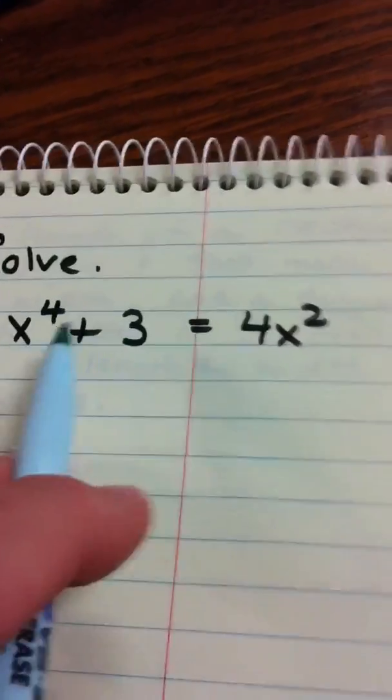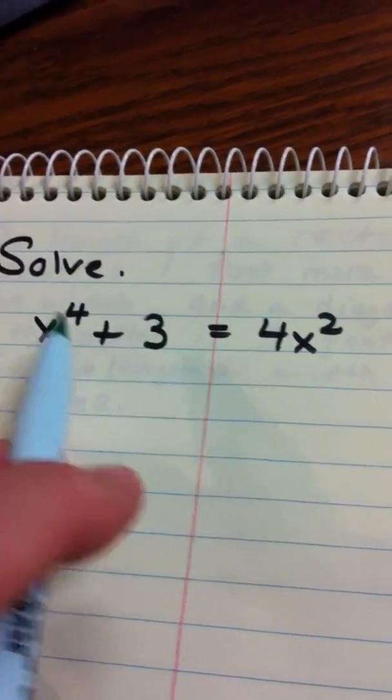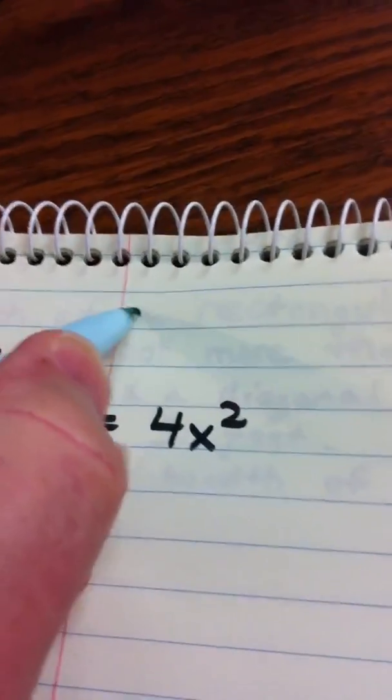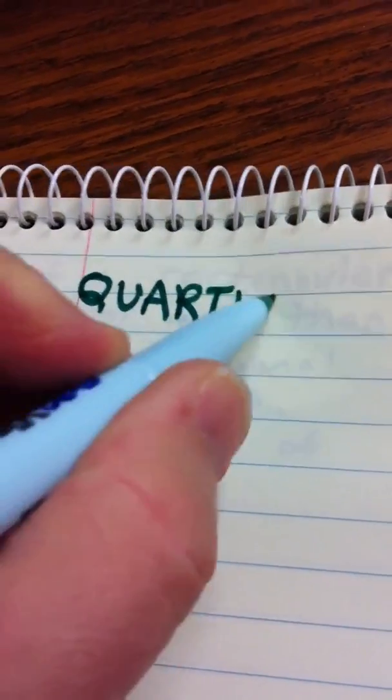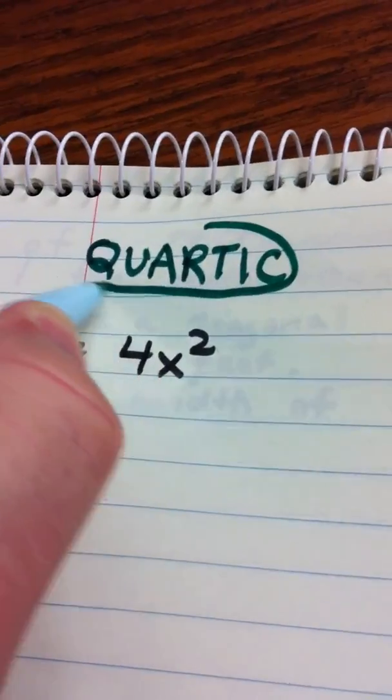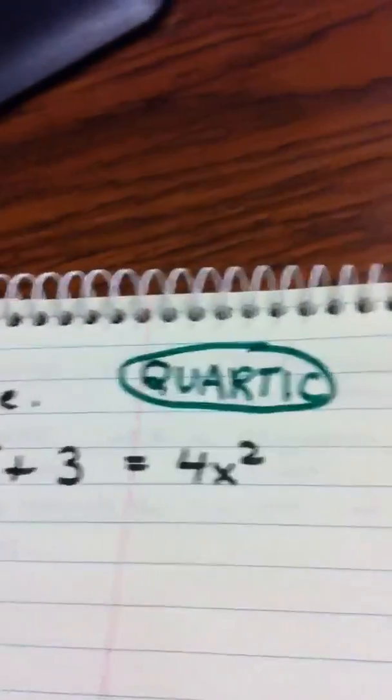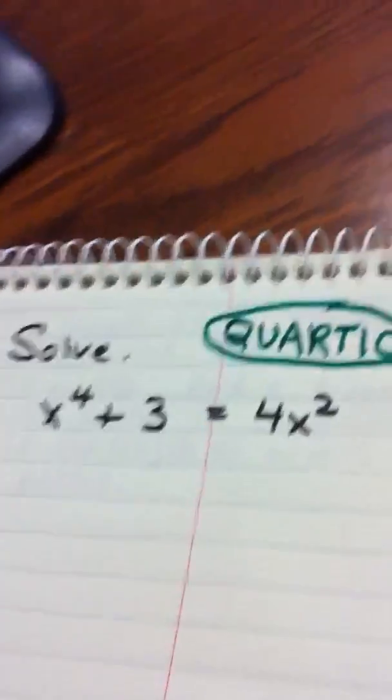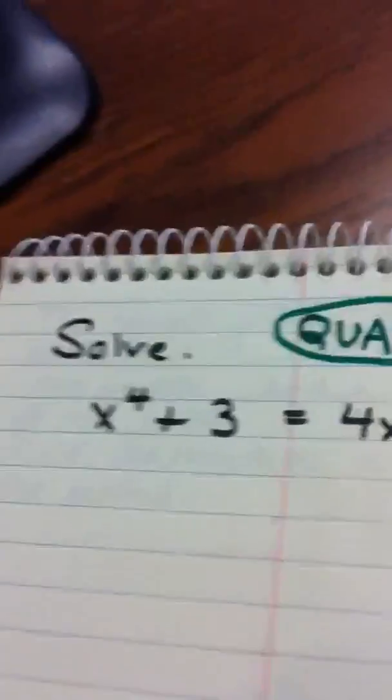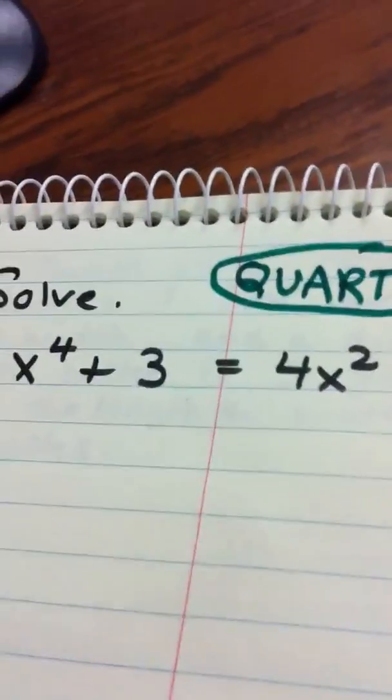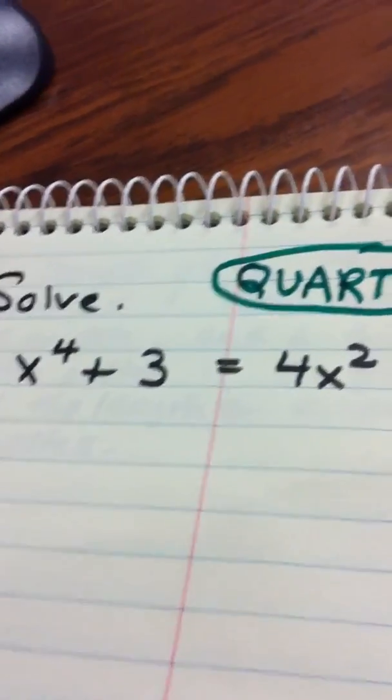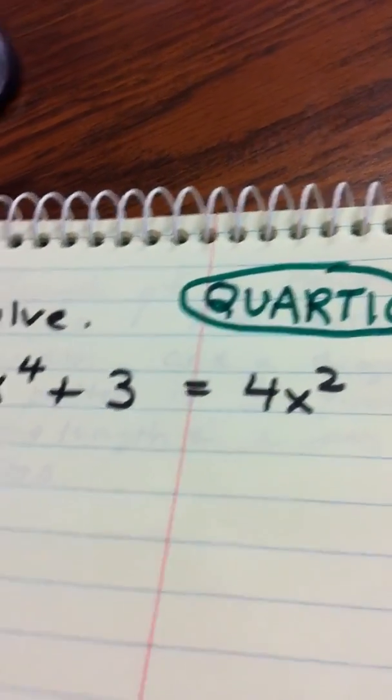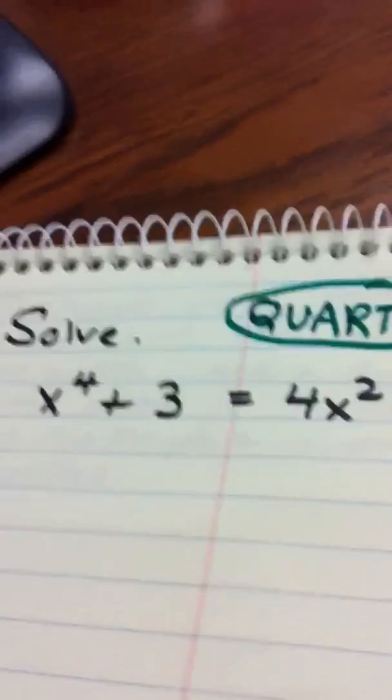Okay, suppose we're asked to solve this fourth degree equation. First of all, I want you to know it by name. A fourth degree equation is called quartic, just like a quadratic is degree two, degree three is cubic, degree four is quartic. So we know we're going to have at most four real solutions to this equation.